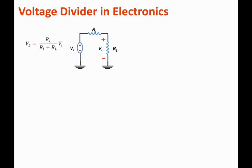It solves for the current first, and then multiplies by the resistance to give you the voltage. We want to investigate three common cases for this simple voltage divider circuit. In the first case, we assume that RL is much, much, much less than Ri — so the load resistance is much smaller than the internal resistance.